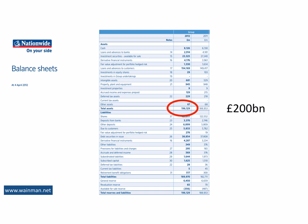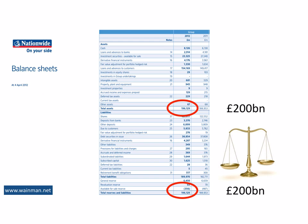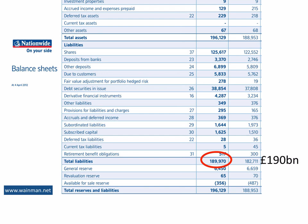The total liabilities of Nationwide are also around £200bn, thus the balance sheet balances. Total liabilities — that is the amounts owed to third parties — amounts to £190bn. The remainder is the reserves, in effect the shareholders' funds, if Nationwide had any shareholders. But as a building society, Nationwide is in effect owned by its members or depositors. This amount represents the ability of Nationwide to absorb any losses that it might make in the future.